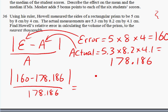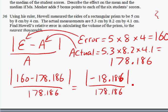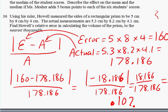160 minus 178, that's going to be negative 18.186 over 178.186. Because we're looking for the absolute value of this, it's actually going to turn into a positive number on the top. That would be 18.186 divided by 178.186 and that's going to be equal to approximately, I need a calculator for this, .102.